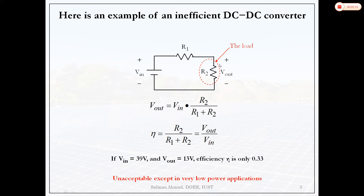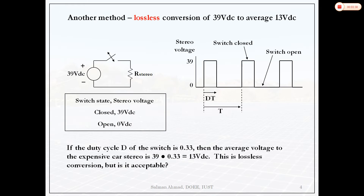For small power applications we can accept this efficiency because cost is the main criteria and the cost is very low. But for high power applications the losses will be more and efficiency will be poor, making it unacceptable. For that purpose we require efficient DC-DC converters.